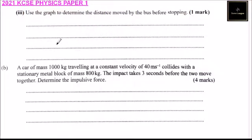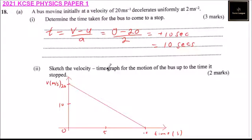And use a graph to determine the distance moved by the bus before stopping. So this is a graph. The distance is the same as the area under the curve. So we just say it is a half, half base times height.